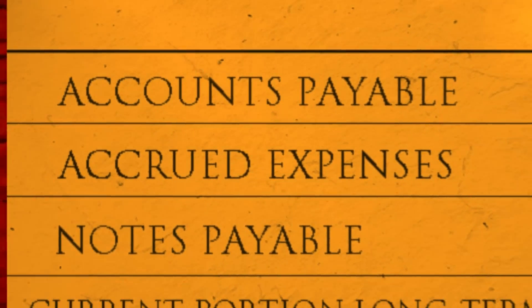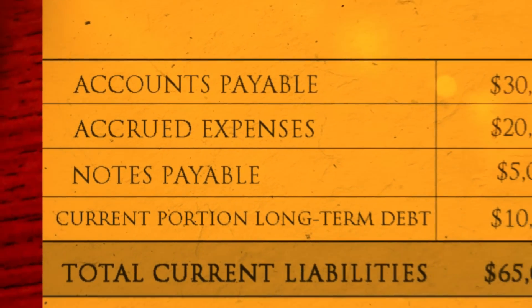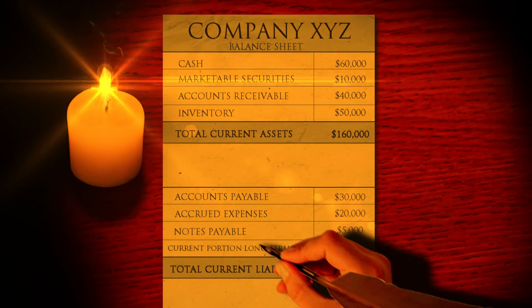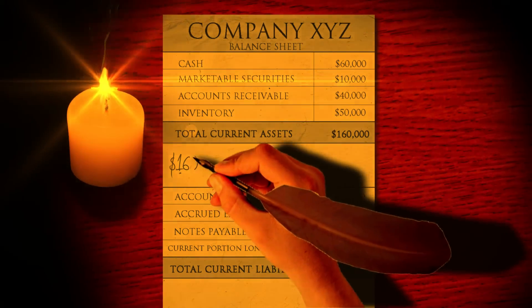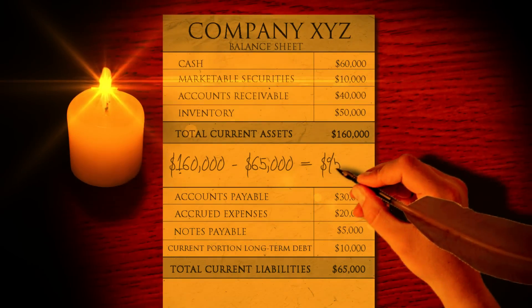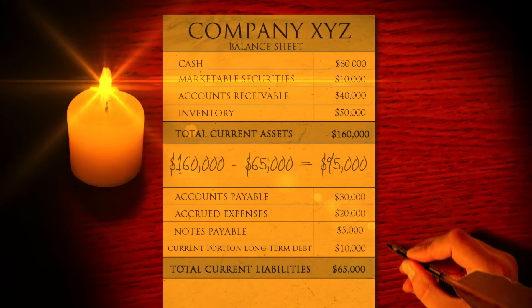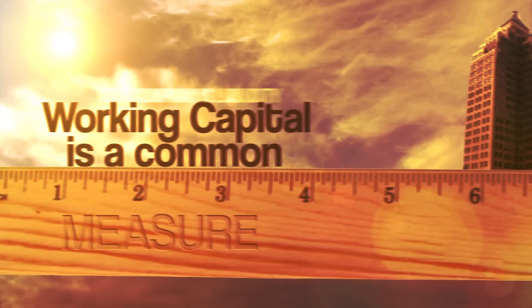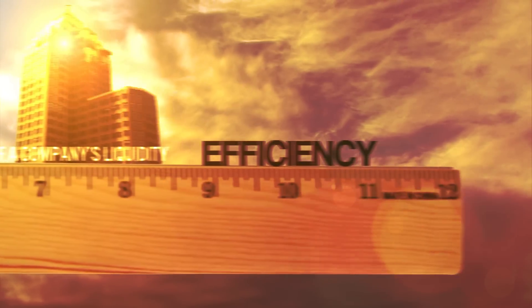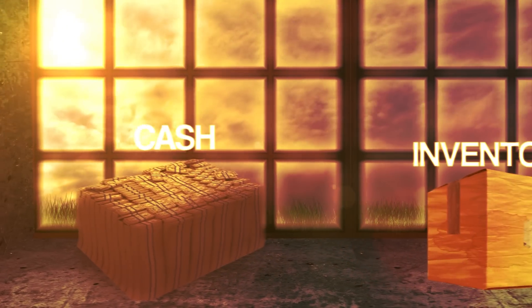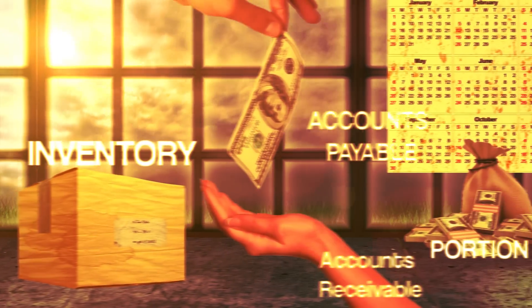Using the working capital formula and the information from the balance sheet of company XYZ, we can calculate that XYZ company's working capital is $95,000. Working capital is a common measure of a company's liquidity, efficiency, and overall health because it includes cash, inventory, accounts receivable, and accounts payable.